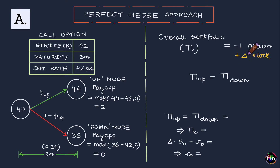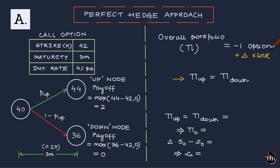To work out delta, we impose the condition that if delta units of the underlying stock truly hedges away the risk of adverse movements in the stock price, then the value of the overall portfolio should be equal in both the up node and the down node. This extra position should make the trader agnostic to movements in the price of the underlying stock. This is our governing condition that will help us work out the value of delta.